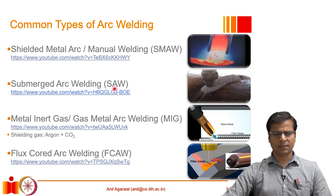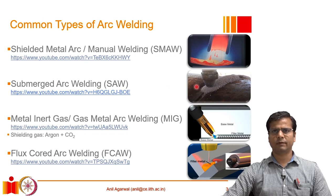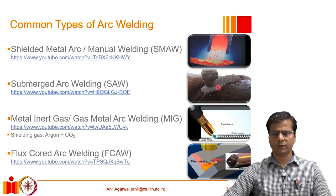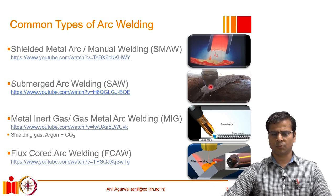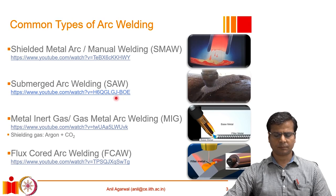A variation of SMAW is SAW — submerged arc welding. Both processes are fundamentally similar, but SAW is much more suitable for automated welding. In SAW, the electrode does not have flux coating; instead, tiny beads of flux material are deposited through a nozzle. A wire acting as both filler material and electrode passes through the nozzle, and the flux beads are deposited around it. The deposited flux provides the shielding around the weld area, enabling very controlled pace and high quality welds.